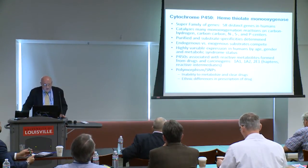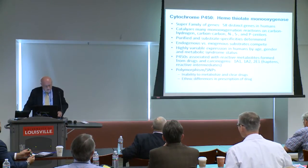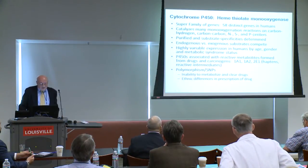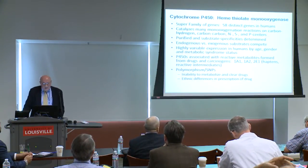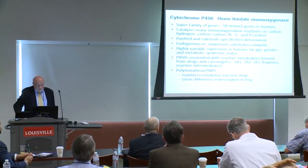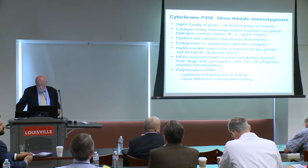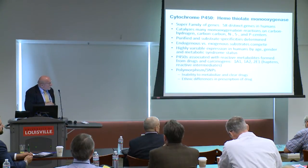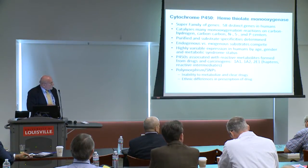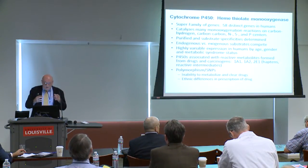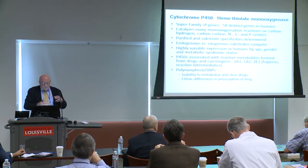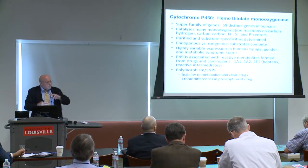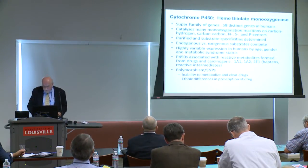P450s are associated with reactive metabolite generation. In particular, there's been a lot of information about CYP1A1, CYP1A2, and CYP2E1 making chemically reactive intermediates. In addition, there are a number of polymorphisms or SNPs in these genes, which account for large variations in ethnic differences in metabolism and identify poor metabolizers versus good metabolizers. Dr. Hein will talk about that.